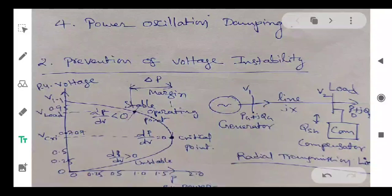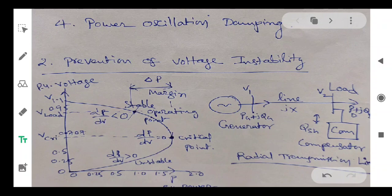Voltage stability can be assessed by using graphical methods. One among the graphical methods is the PV curve — the power-voltage curve. This PV curve, as shown in the left side at the bottom of the page, is oval in shape, and the nose point indicates the critical point of the system.